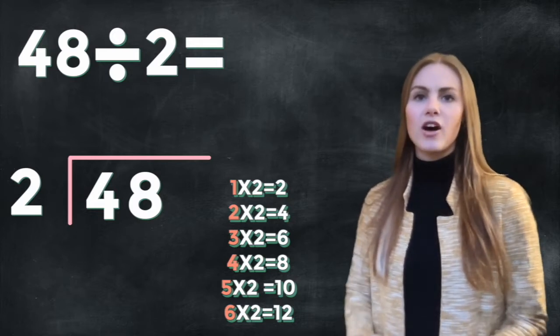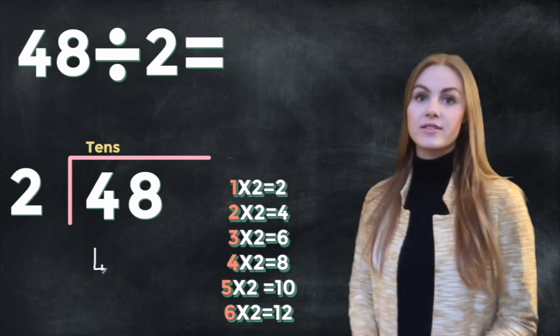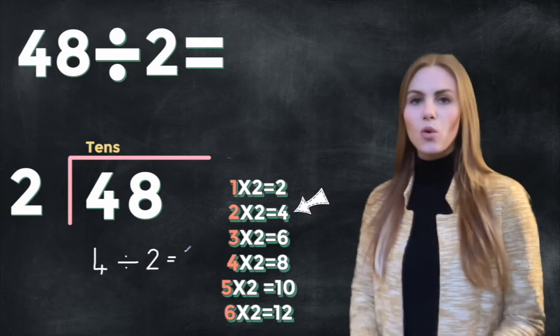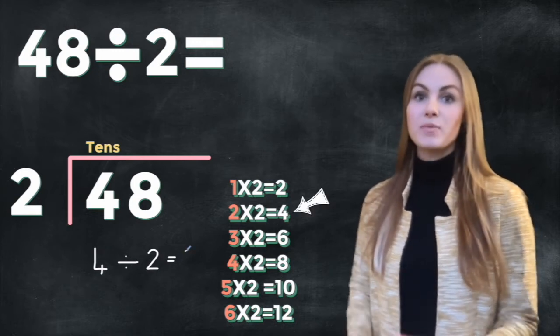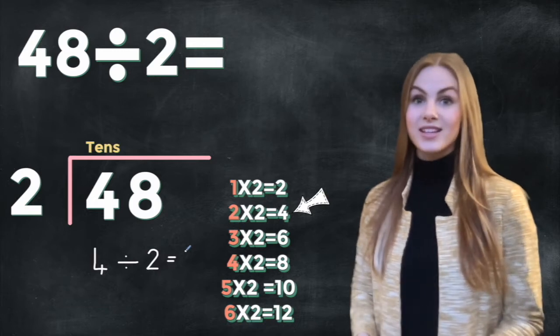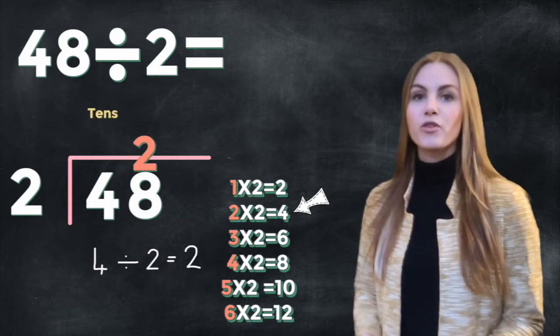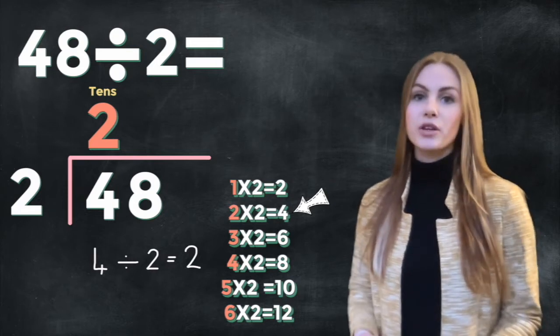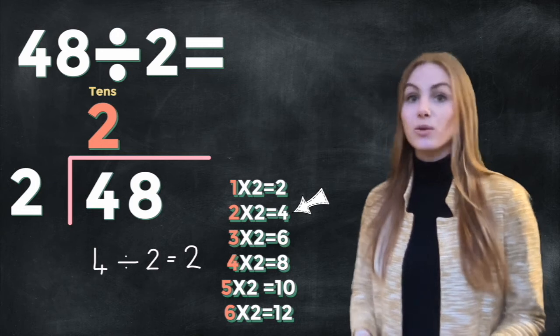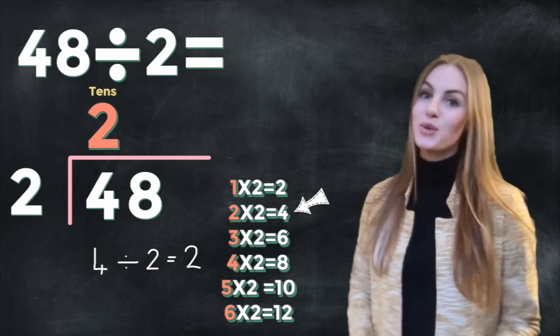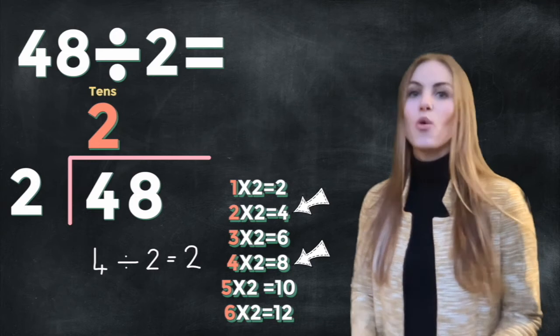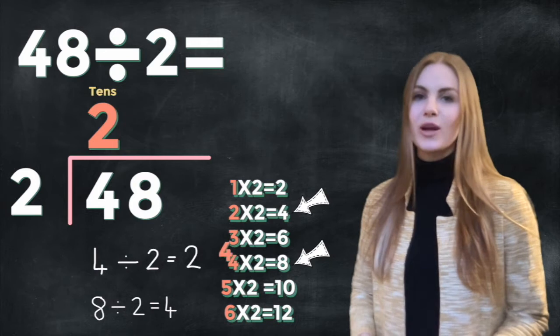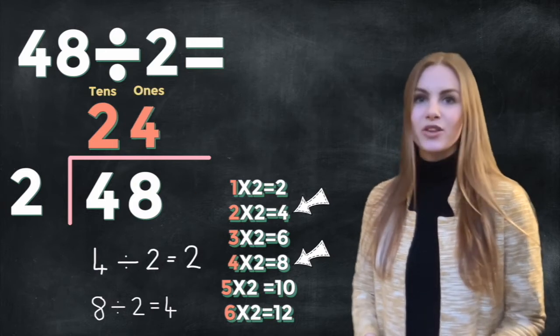So we're going to start by looking at our tens. We've got four tens. What we're going to do is see how many times does 2 go into 4, or if we counted in twos how many times until we reach 4. It goes in twice. So we're going to place that 2 above the 4 into the tens column. We're doing this because what we've actually done is work out how many twos there are in 4 tens, so in 40. Now we're going to work out how many times 2 goes into 8, or 8 divided by 2. 8 divided by 2 is 4. So we're going to place that 4 into our ones column. So we've now got the answer 24.